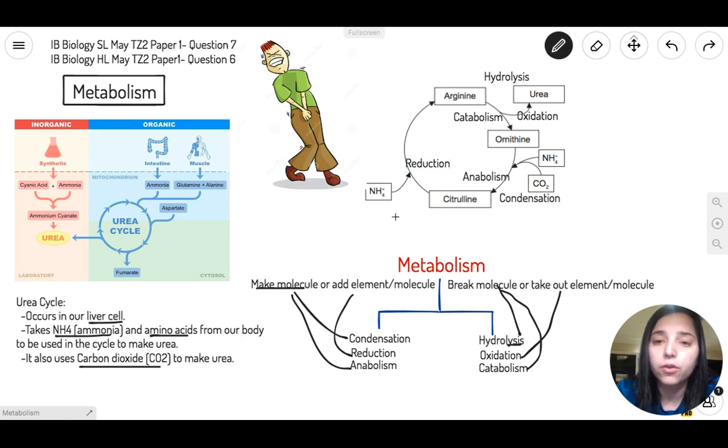If you look at the overall urea cycle, you can see there is hydrolysis which is catabolism, you got oxidation which basically you're taking an element out, you have condensation and anabolism which you're adding to make new things, and you're having the adding of another molecule into a process which is reduction. So all of these are included in the urea cycle.